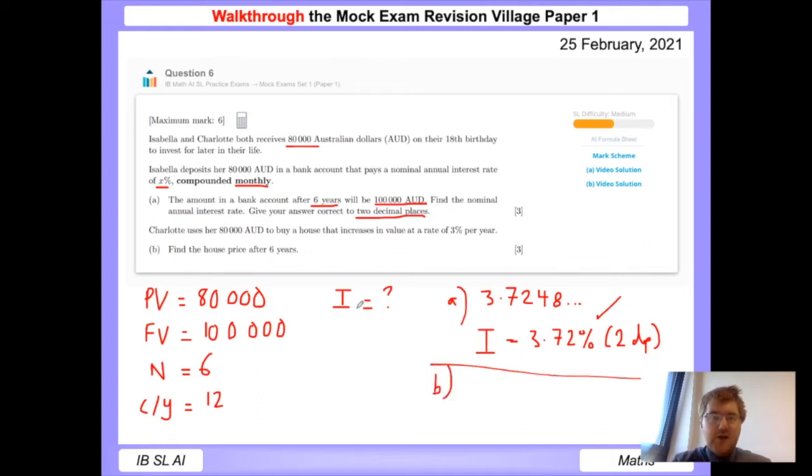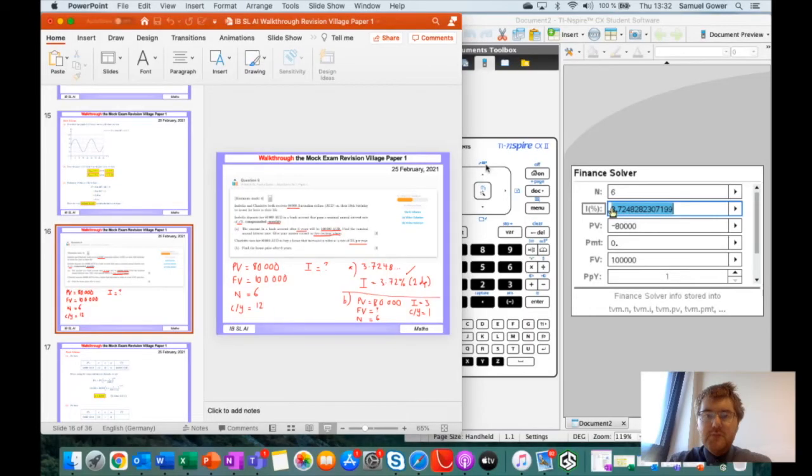Part b: Charlotte uses 80,000 Australian dollars to buy a house that increases in value at a rate of 3 percent a year. Find the house price after six years. This is a standard compound interest question. Our present value is 80,000. Our final value is what we want to find. N is still six. We do know the interest rate, that's 3 percent per year. There is no compounding effect here, so we're going to put that as one.